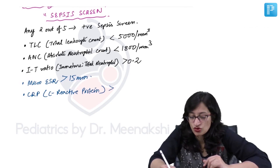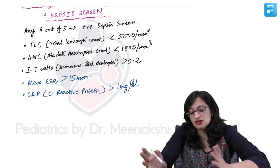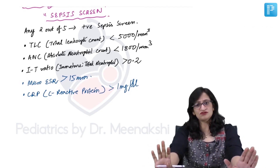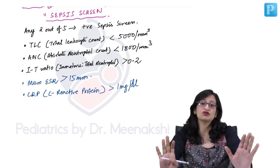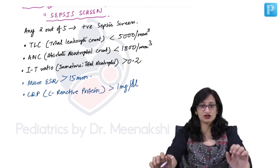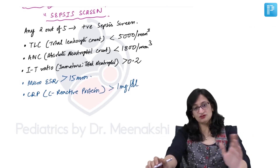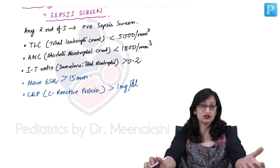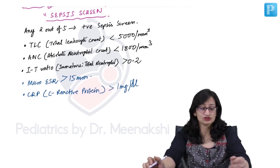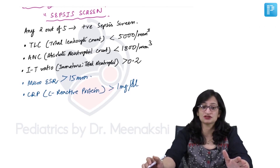CRP is positive if the C-reactive protein is more than 1 milligram per dL. All these are very simple investigations and their reports can be obtained within 1 to 2 hours. So if any 2 out of these are positive, then the baby has a positive sepsis screen and probable neonatal sepsis — this helps in supporting your diagnosis of sepsis.